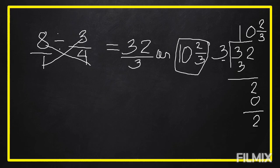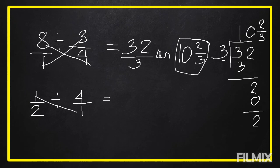Another example — this time dividing a fraction by a whole number: one-half divided by four. We put a denominator of one under the whole number four. Then we cross multiply: one times one equals one, and two times four equals eight. So our answer is one-eighth.